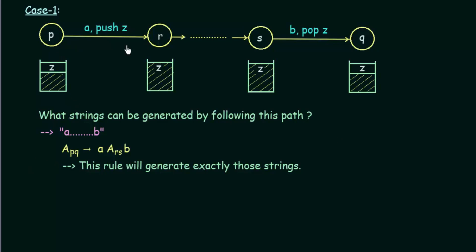For this portion of the PDA, we have converted it into a rule added to our context free grammar. This is the CFG created for this pushdown automata — that was case 1.